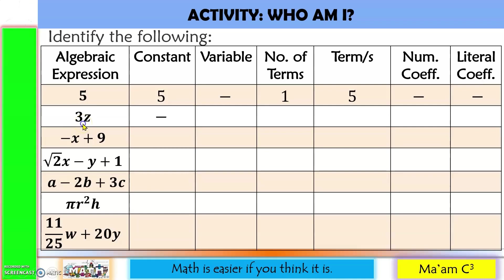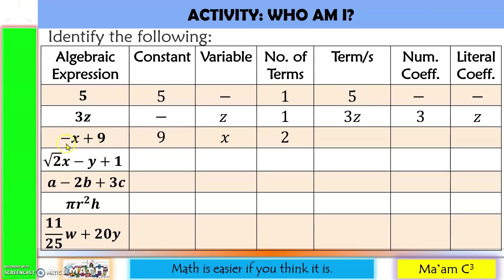Here, 3 is not considered a constant but a numerical coefficient. z is a variable. We only have one term because this works as one, and that term is 3z. Our literal coefficient is z. In here, the constant is 9. The variable is x. We have two terms. Those terms are negative x and positive 9. Our numerical coefficient is negative 1 — since you do not see any number, it is understood to be 1, so we have negative 1. And our literal coefficient is x.